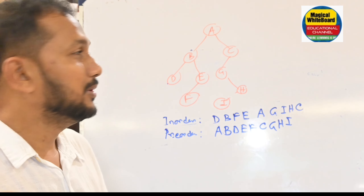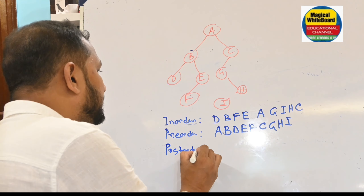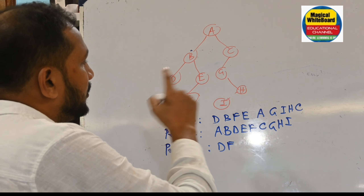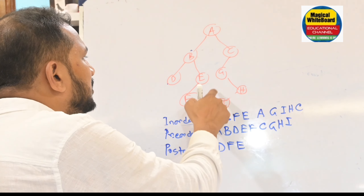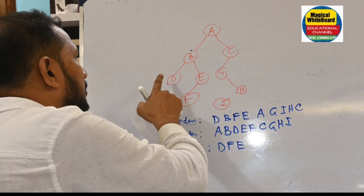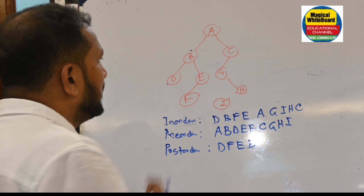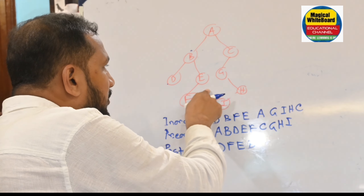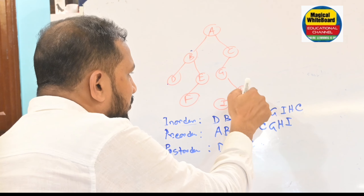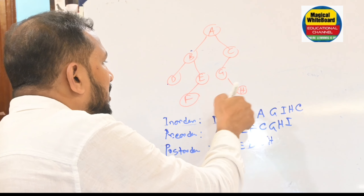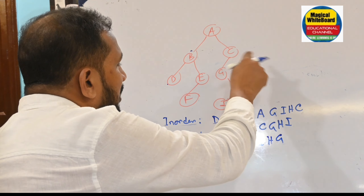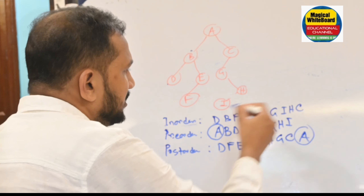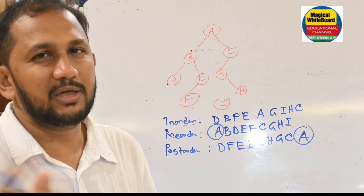Now consider post-order traversal. In post-order, visit left, right, then root. Left is D first, then from the right subtree find the left again — left is F (under E), root is E, no right. Then left and right are over, so visit root B. From the right subtree, there is no left node of G, so visit the right subtree — left is I, no right of H, then root H, root G, then root C, and finally root A. Post-order result: D, F, E, B, I, H, G, C, A.